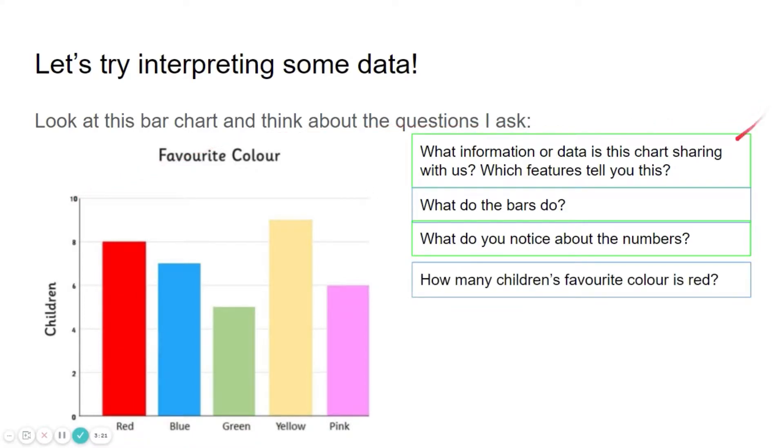How many children's favourite colour is red? You need to look at the red bar. And if you look at the top of the bar, it's in line with the number eight. So it tells us that eight children have chosen the colour red as their favourite.